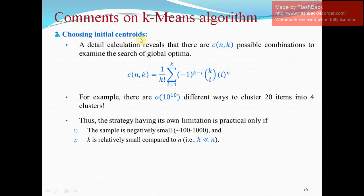However, this strategy suffers from combinational explosion problem due to the number of all possible solutions. A detailed calculations have been studied over here for possible number of combinations. If for C, the formula for combination is C(N, K). For C and N common, the formula is given as, it can be expanded as 1 by factorial K. Then summation i equals 1 to K, minus 1 raised to the power K minus i multiplied by i to K, i raised to the power N. For example, if there are 10 raised to the power 10 different ways to cluster 20 items in 4 classes. Thus, the strategy having its own limitation is practical only if the sample is negatively small, N is about 1000 and K is relatively small compared to N.